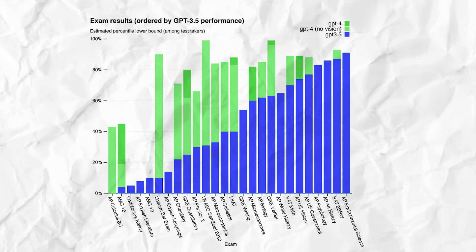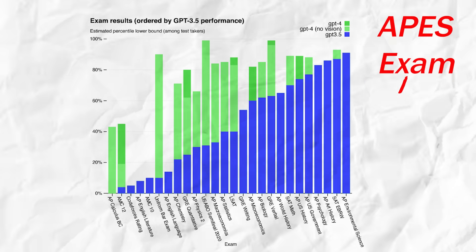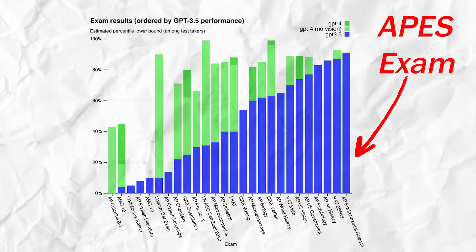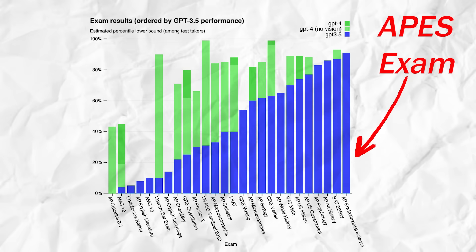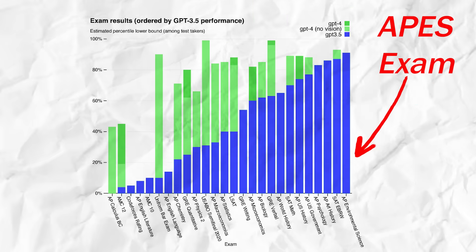As a quick side note, I think that the straightforward nature of the APES exam is part of the reason that ChatGPT 3.5 was able to do better on that exam than any other standardized tests that researchers gave it. Even more so than in other AP subjects, doing well on the APES exam really comes down to reviewing as much of the course content as you can.